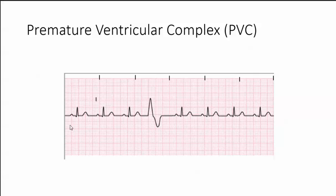Let's take a look at this strip. In this first complex we have a normal P, normal PRI, normal QRS, and the P wave comes before the QRS. So we have a normal sinus rhythm — sinus, sinus, sinus, sinus, and sinus. They all look alike; it's all good.